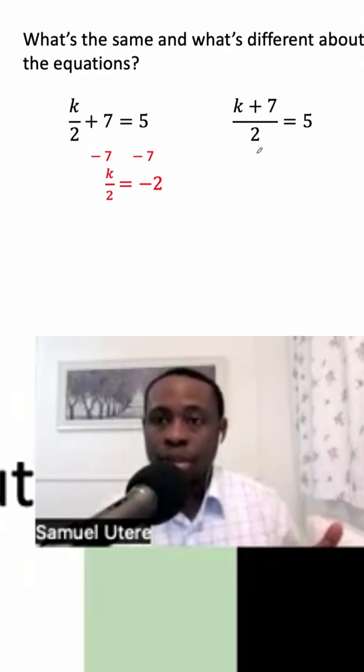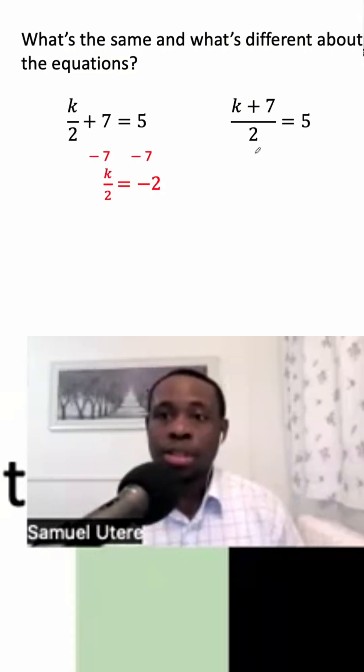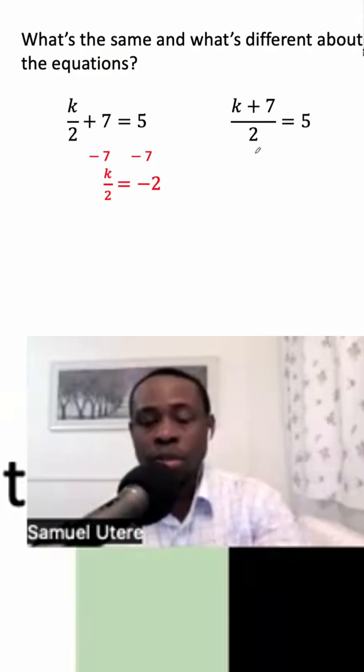Next, what do we need to eliminate to help us have K being on its own, so that we have K equal to something? Of course, it is division by two. So the inverse of division by two is to multiply by two.